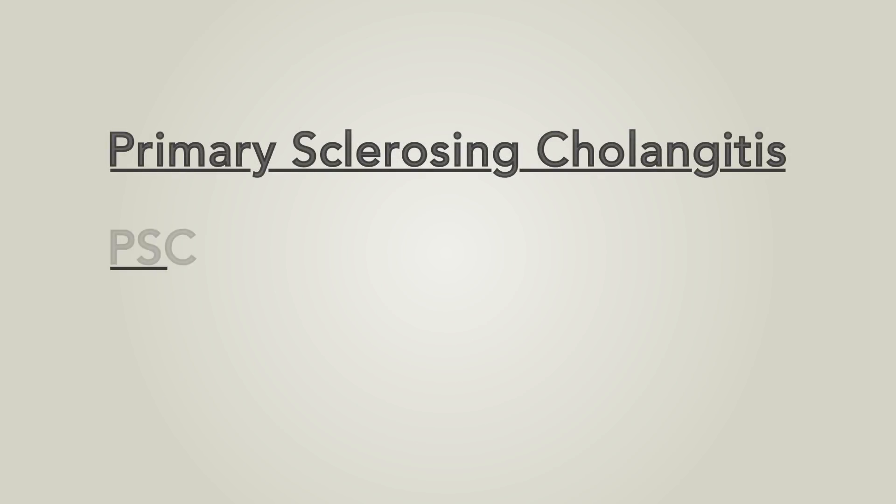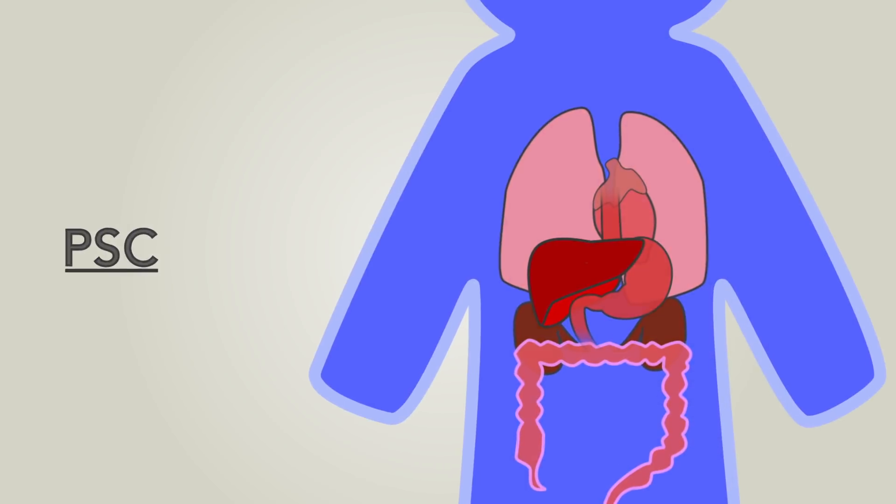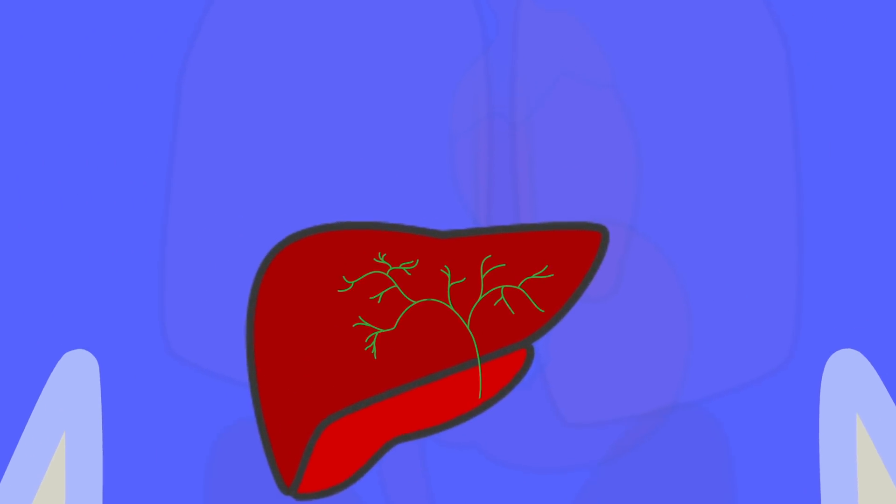Primary sclerosing cholangitis or PSC is a bile duct disease characterized by the progressive narrowing and blockage of the bile ducts inside and outside the liver.